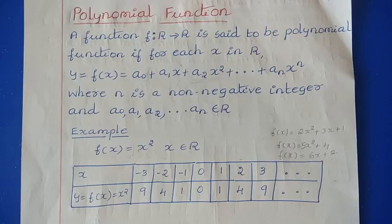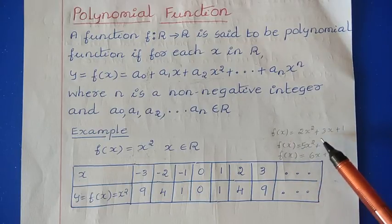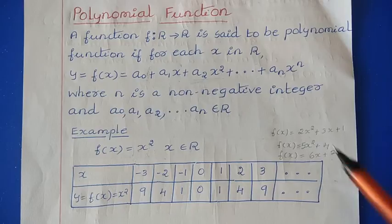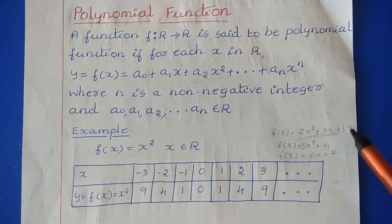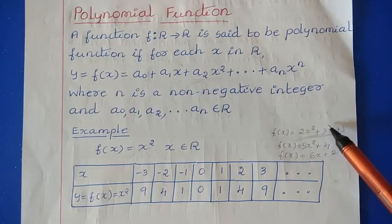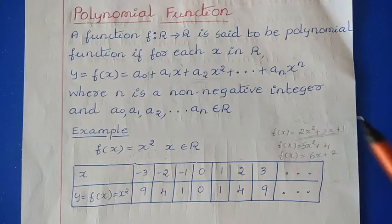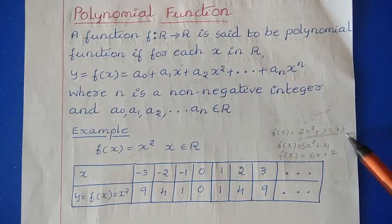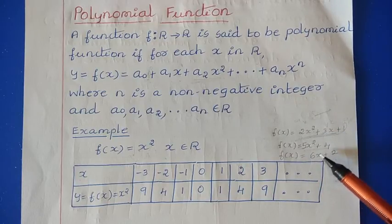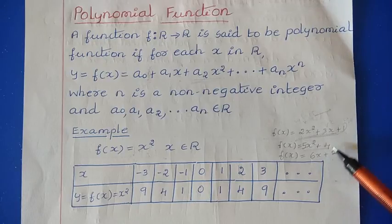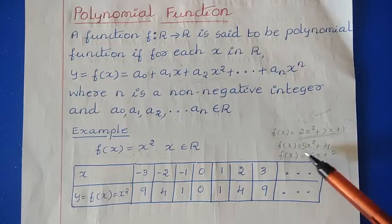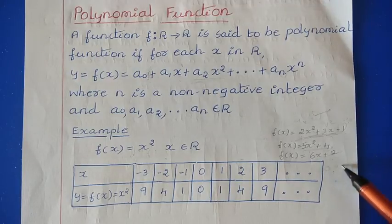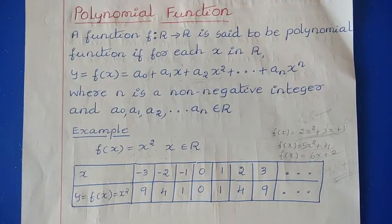The range may vary depending on the polynomial function. For example, f(x) = 2x² + 3x + 1, where a2 = 2, a1 = 3, and a0 = 1. Another example: 5x² + 4, where a0 = 4, a2 = 5. We can also have 6x + 2, which is in the form a1·x + a0. So like this, we can have different polynomial functions.